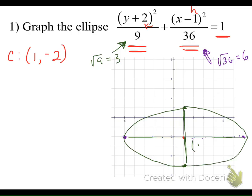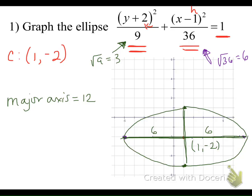With a center at (1, -2), we have a major axis length of 6 units on the left and 6 units on the right, so our major axis is 12 units long. Our minor axis is the smaller diameter — that was 3 units up and 3 units down — so our minor axis has a length of 6 units.